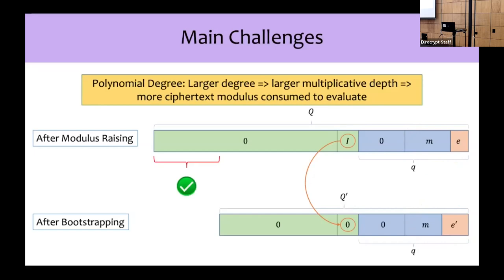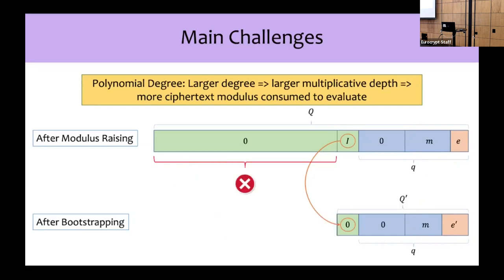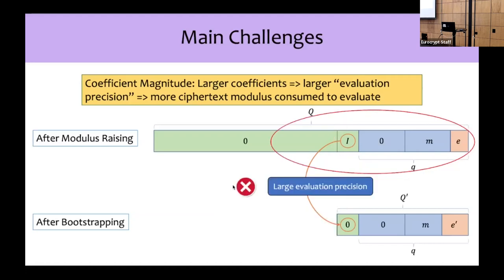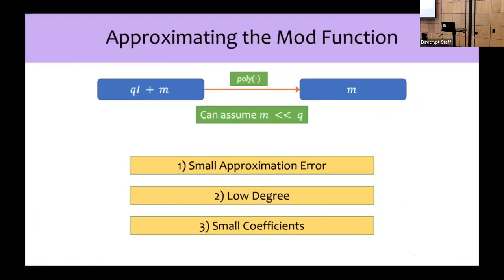The second challenge has to do with polynomial degree. Because we have to evaluate this polynomial homomorphically, if the polynomial degree is too high, we may either not be able to compute it at all, or after computing it we will have consumed so many ciphertext modulus bits that we'll basically have to bootstrap again immediately. The final challenge has to do with coefficient magnitude: if the coefficients of the polynomial are large, we have to operate at a larger evaluation precision, corresponding to losing more ciphertext modulus bits per depth of computation. So we need a polynomial approximation of the mod function that simultaneously has small approximation error, low degree, and small coefficients.